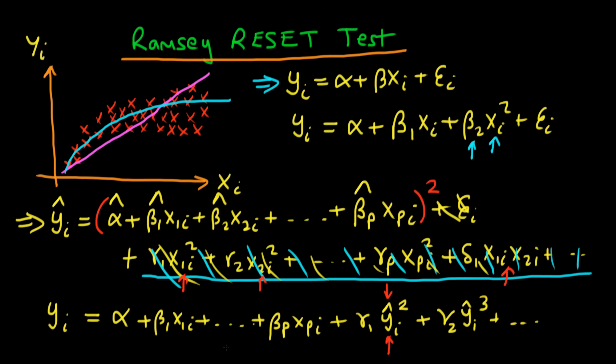And the idea is that if our model is well specified, then a t-test on this individual coefficient here should actually lead us not to reject the null hypothesis that gamma one is equal to zero. In other words, there's no need to be including these quadratic terms in our model.